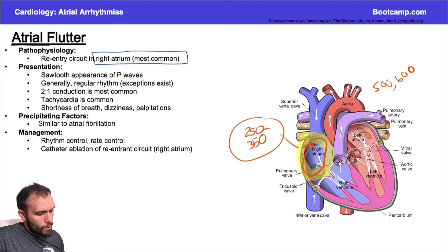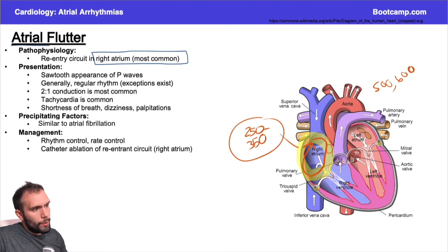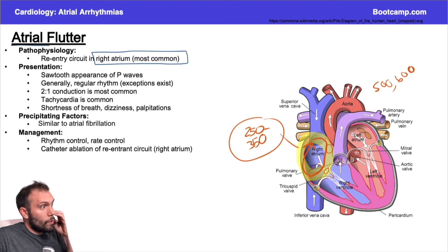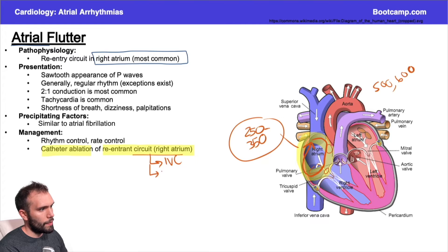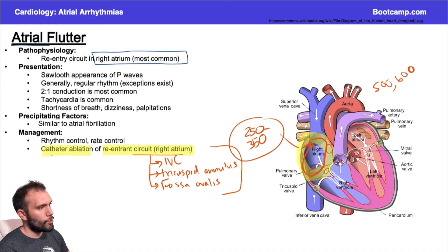The circuit in atrial flutter is right around the inferior vena cava — around the isthmus of the tricuspid valve. The fossa ovalis, which connects to the left atrium, is also involved. So the fossa ovalis, isthmus of the tricuspid valve, and inferior vena cava are the classic regions of the circuit. For ablation of atrial flutter, you're thinking right atrium — particularly near the tricuspid annulus, inferior vena cava, and fossa ovalis.